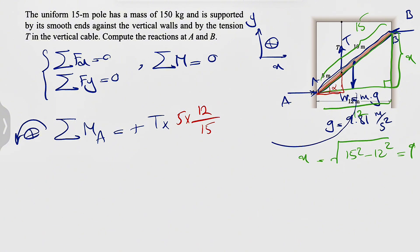We're going to have the moment of the weight, which is clockwise, so negative mass times acceleration of gravity. Mass was 150, so 150 times 9.81. And we're going to have the distance from A to G, which we know since we have a uniform rod, it will be exactly at the middle. So we're going to have 12 divided by 2, which is 6.